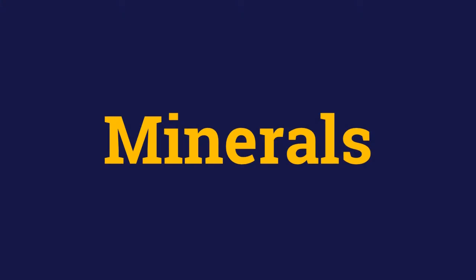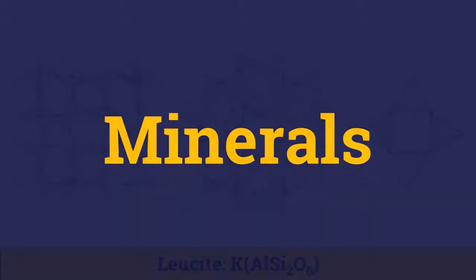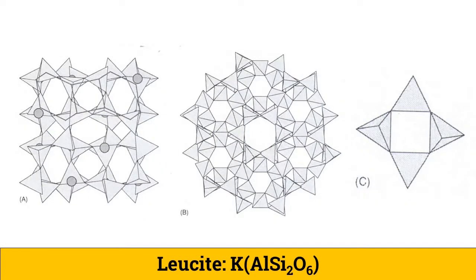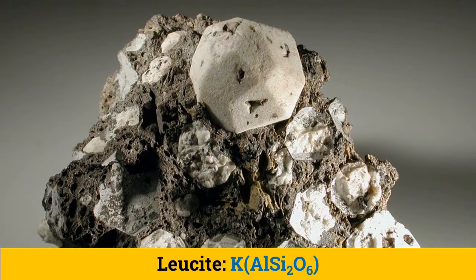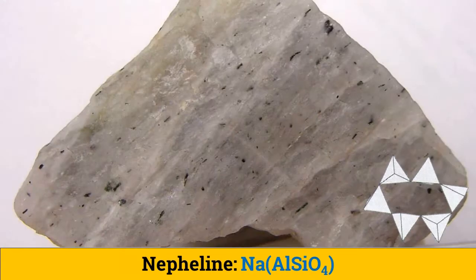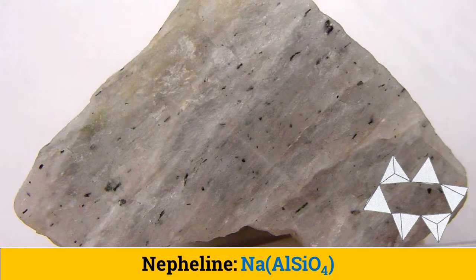Let us now see some feldspathoid minerals. Leucite contains 4-member and 6-member rings of tetrahedra, and the channels so formed do not intersect. It crystallizes in the cubic crystal system and shows conchoidal fracture. Nepheline exhibits highly distorted 6-member rings and crystallizes in the hexagonal crystal system. Insertion of cations in the channels causes the distortion of the framework.